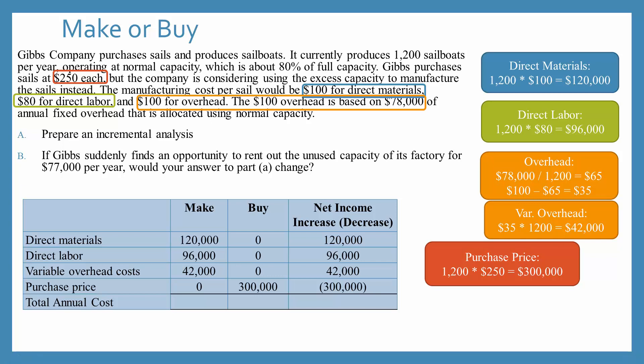So if we do the math, we can see that choosing to make the sails would actually cause net income to increase, because by buying them right now, they have a $42,000 decrease in net income. So they should choose to make the sails.